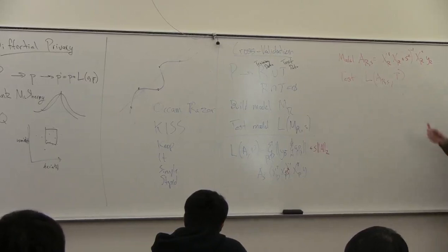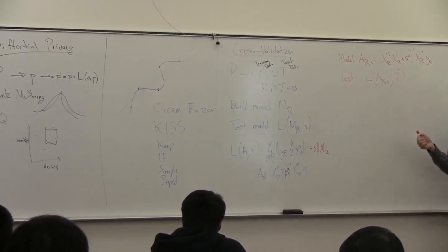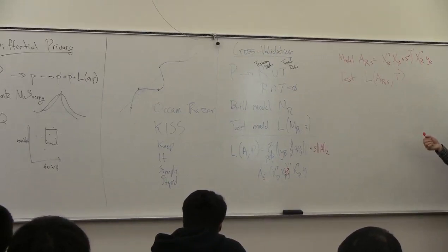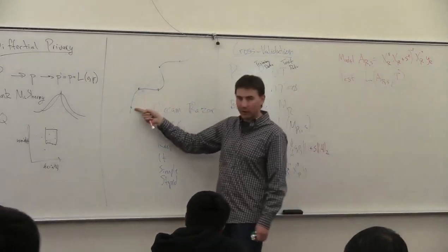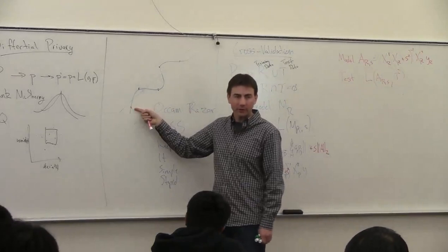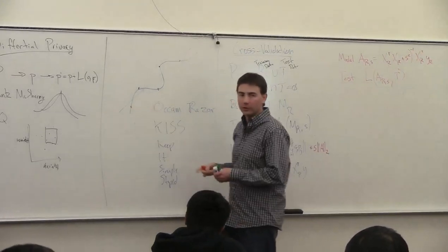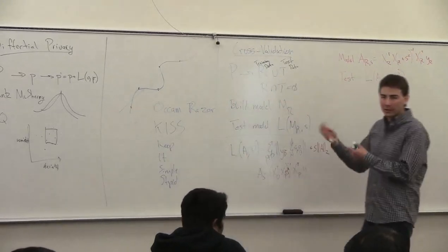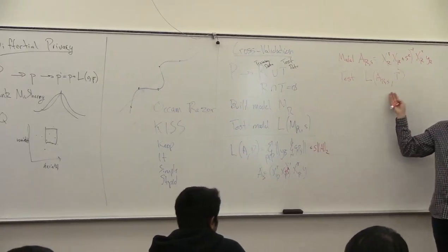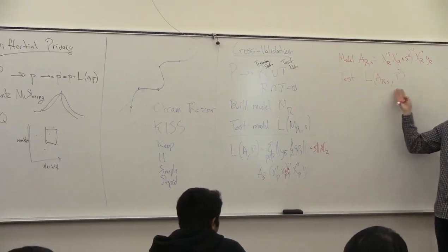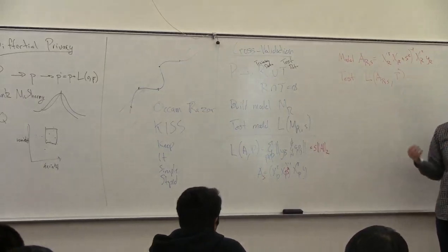When you're testing how good you did on your own data, you're going to end up in a situation where you get zero error — you're going to fit exactly to it. You can get the error to be artificially small. So you shouldn't test on your own data; you should test on the data that you've held out.